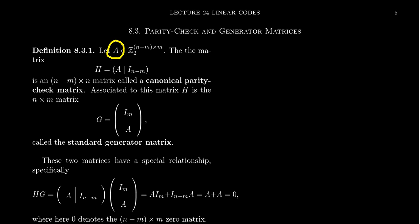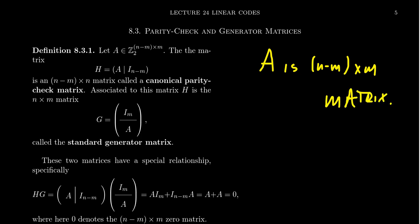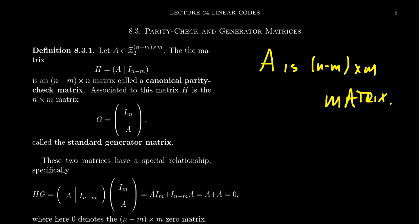We start with a matrix A which is an (n minus m) by m matrix. With this matrix A we can build a new matrix H by augmenting A with the appropriately sized identity matrix — the identity has the same number of rows as A, making H an (n minus m) by n matrix. We call this the canonical parity check matrix, which will be used to create our linear code.